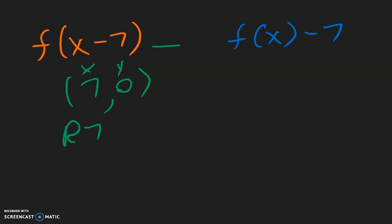Now look at the blue one. This time, inside, we don't have anything with the x, so the x coordinate is 0. And outside is negative 7 — outside stays the same — so the y coordinate is negative 7. We did not move anywhere in the x direction, but in the y direction it's negative, so we went down 7 spaces.